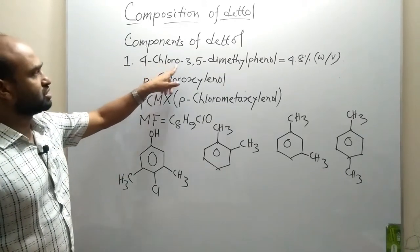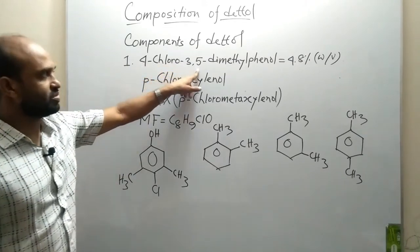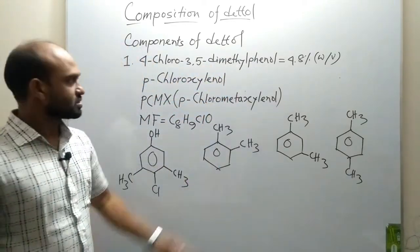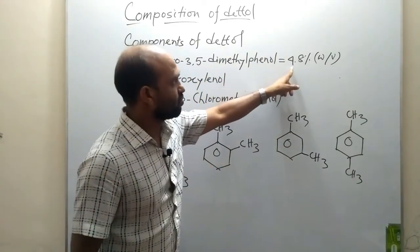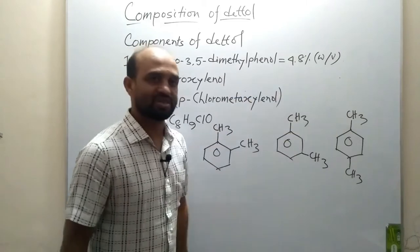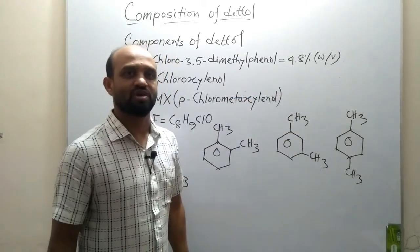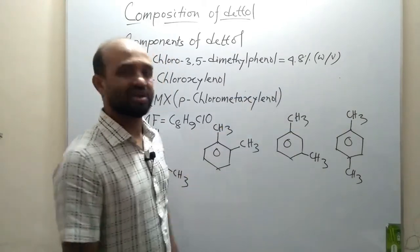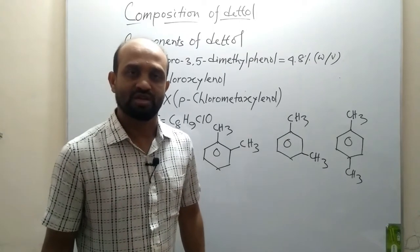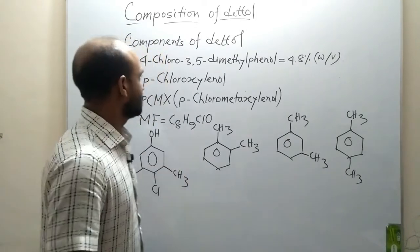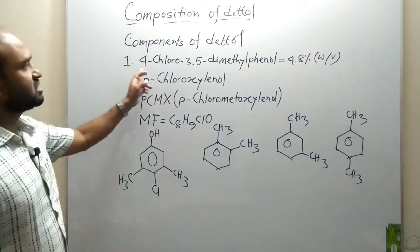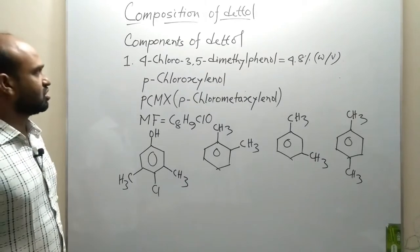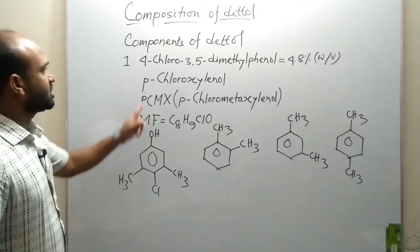The first component is 4-chloro-3,5-dimethylphenol. It is taken at 4.8% w/v, that means 4.8 grams in 100 milliliters of Dettol solution. This is the main component of Dettol, and its another name is parachlorometaxylenol.